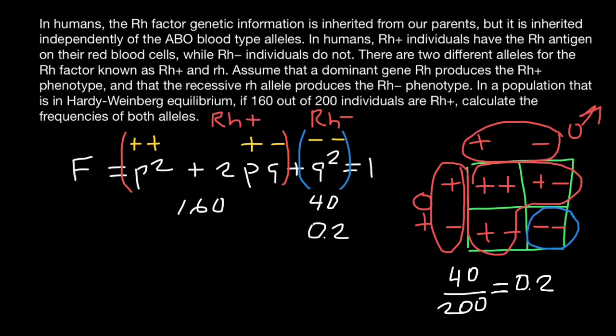And that means that the frequency of the Rh positive phenotype would be 0.8, or we also can say 80% and 20%. Now, as you see, according to our formula, q² stands for the frequency of 0.2.